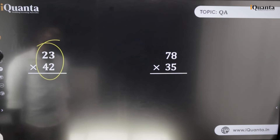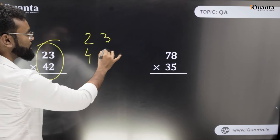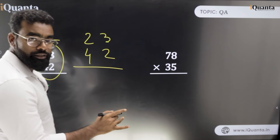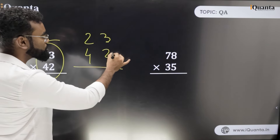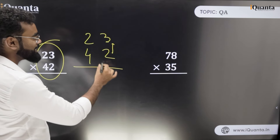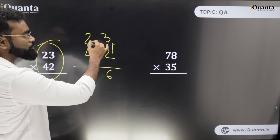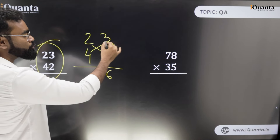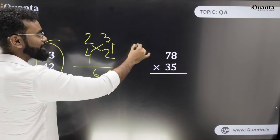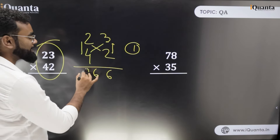So let's think about 23 into 42. I'm writing it now clear and big. Understand the steps — very important. First we will do 3 into 2, which is 6. The next step is 2 into 2 plus 4 into 3: 2 into 2 is 4, and 4 into 3 is 12, so 12 plus 4 is 16. Write 6 and carry forward 1. Next is 2 into 4, which is 8, plus the carry of 1 is 9. So the answer is 966.